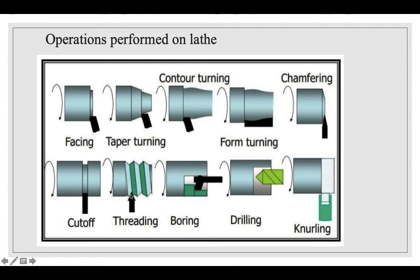Cutting off is the removal of material after a particular depth. Threading is the process of creating threads. Boring is the process of increasing the size of an already existing hole up to a particular length — the hole size is increased using a boring tool. Drilling is the process of creating a hole. Knurling is the process of creating a diamond-shaped pattern on the work surface using a knurling tool; it is usually used for gripping purposes.